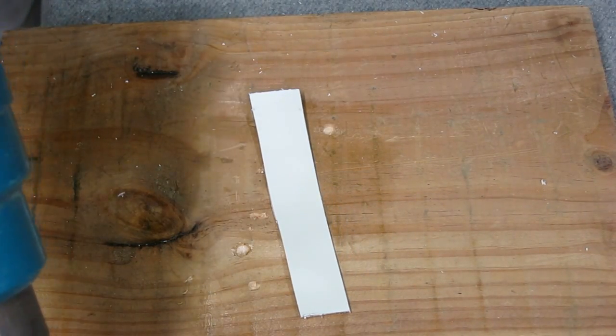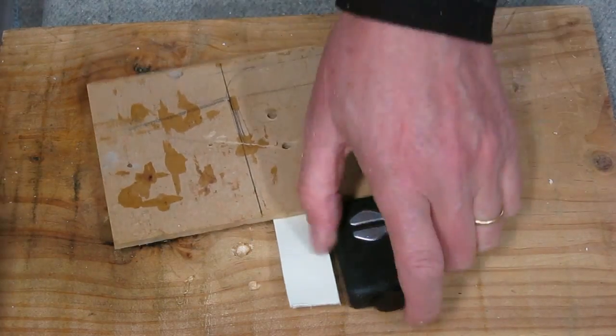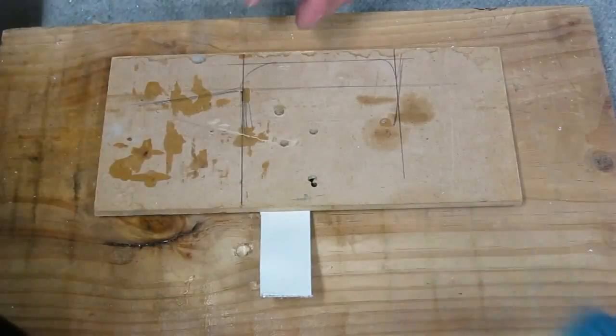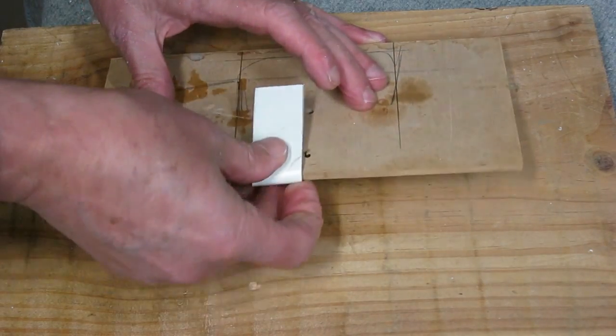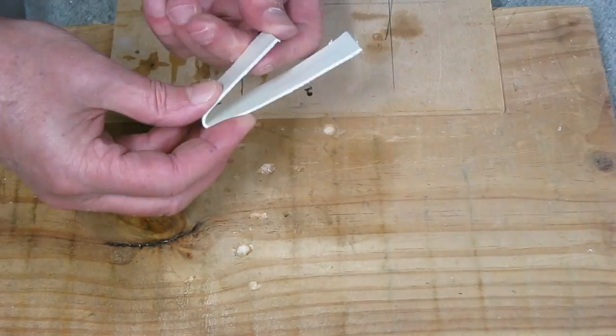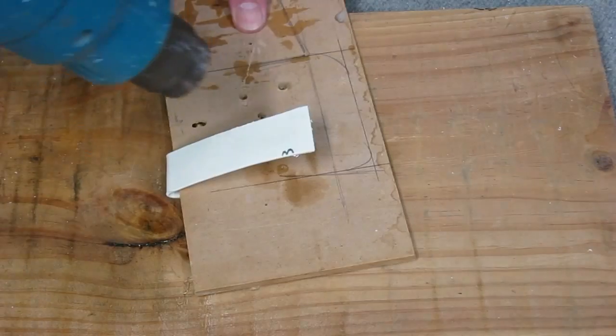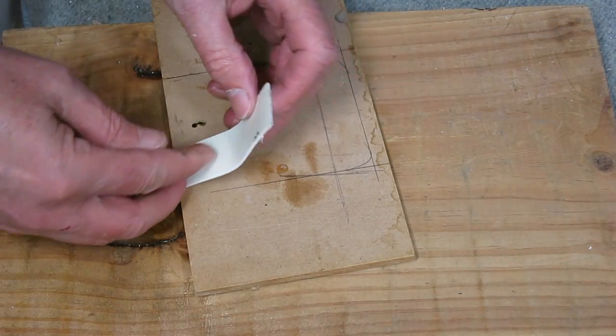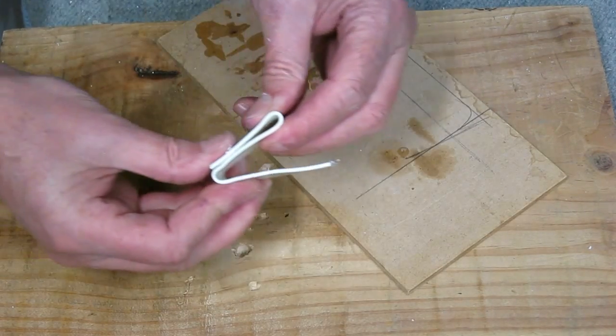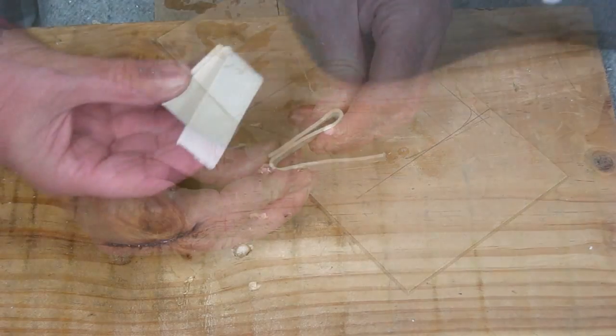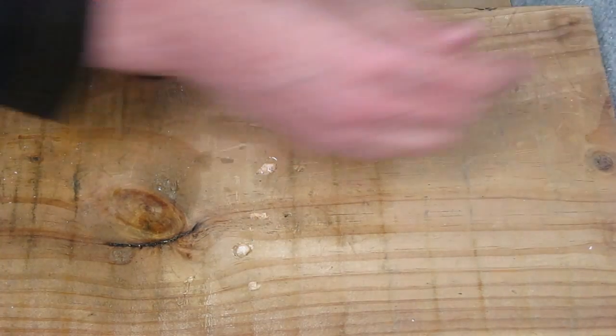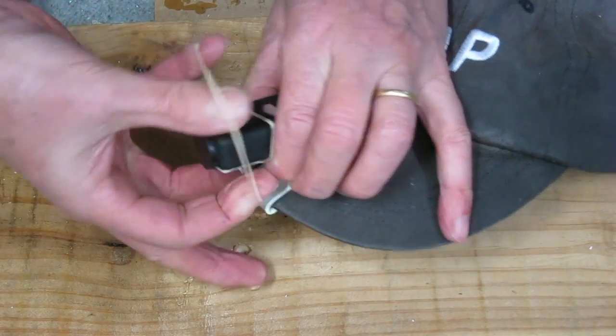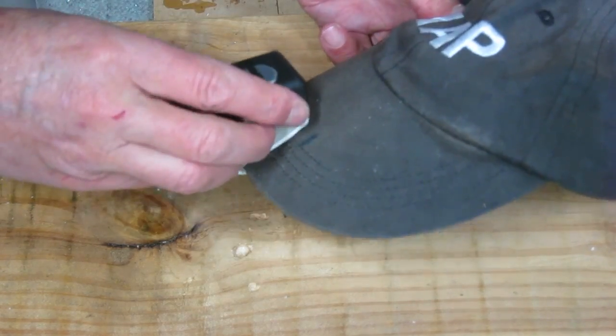And now for the hat cam mount. So that's just a strip about 6 inches long by an inch wide, and just a couple of quick bends and it's done. You'll need to do some test filming to see if that angle is correct for your head posture and the angle of view of your camera.